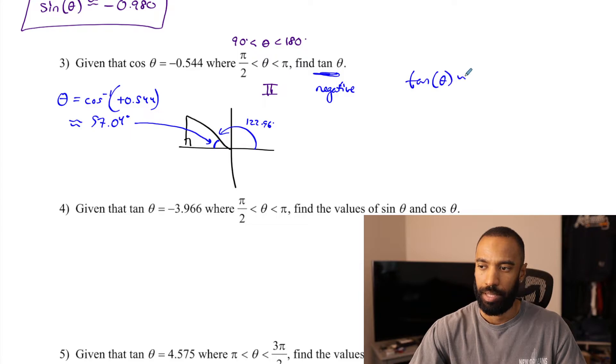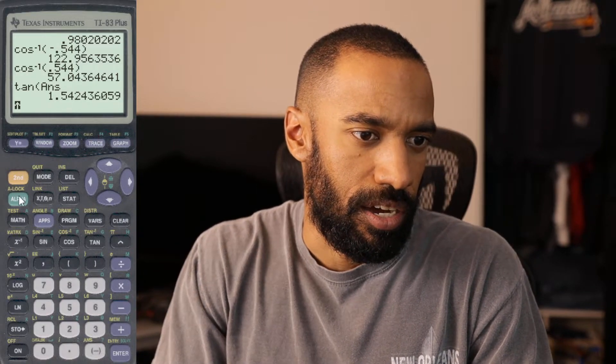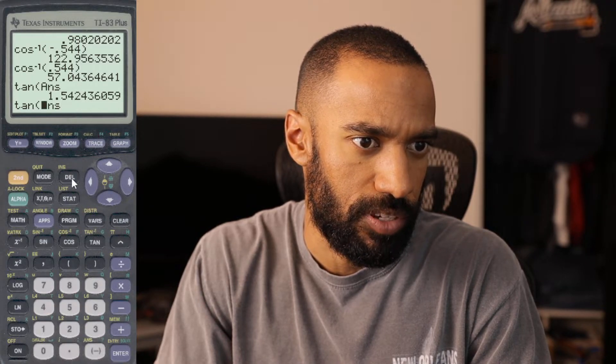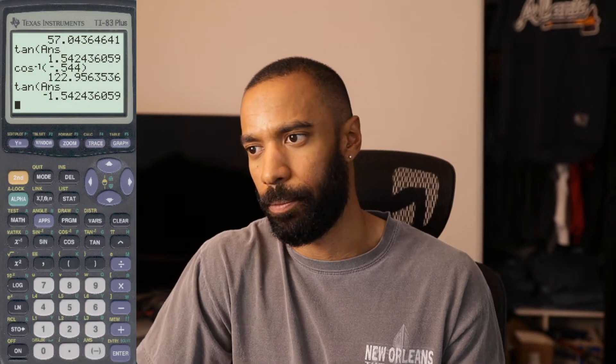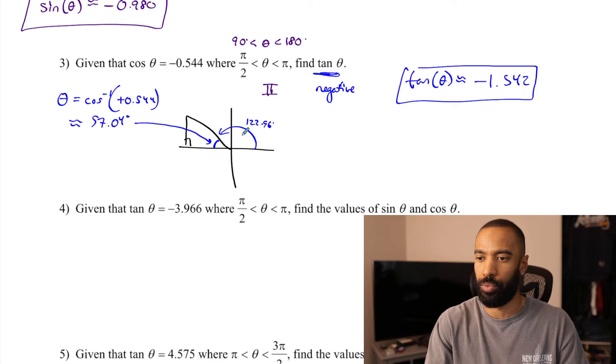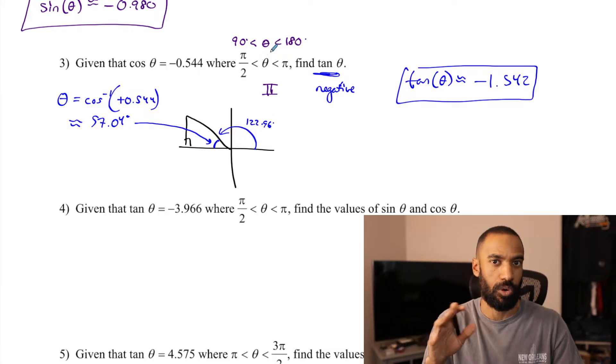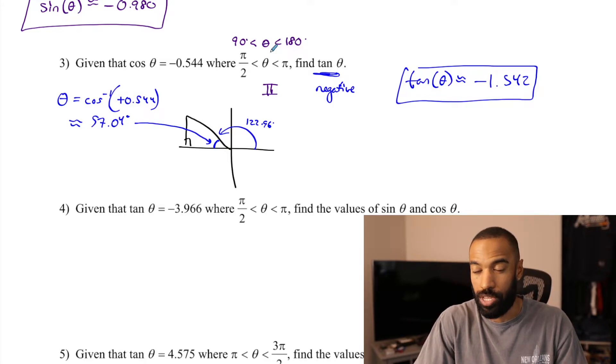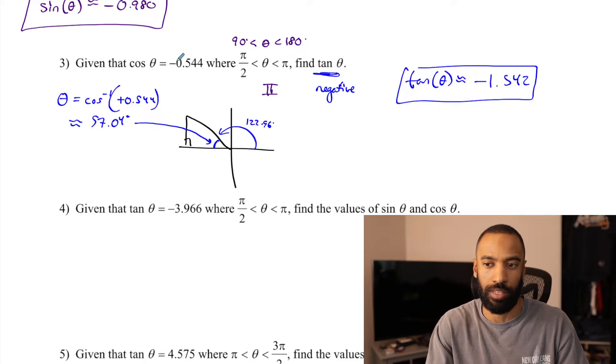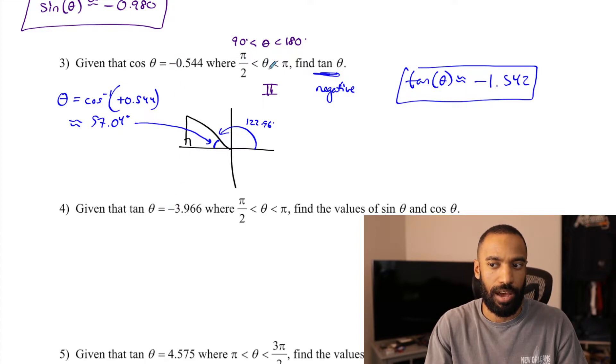Taking tangent of that exact angle, the calculator gives 1.542, but it has to be negative — so negative 1.542. If I had done tangent of the original angle of 122.96 degrees, I'd still get negative 1.542. But if this had been between π and 3π/2, you would have needed a positive answer, and if you're not thinking about the reference angle within the quadrant you'd be in trouble.